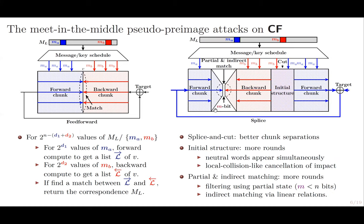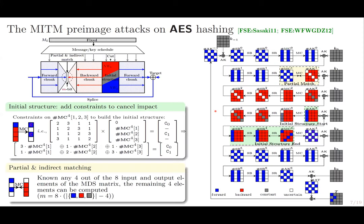Several advanced techniques have been proposed to find better chunk separations and to cover more rounds. In 2011, the Meet-in-the-Middle pre-image attack was applied to AES hashing mode. In the attack, the neutral words are directly selected from the encryption state where the key state is fixed. Using initial structure and indirect partial matching, the attack successfully covers several AES hashing modes.